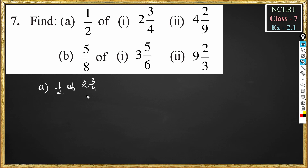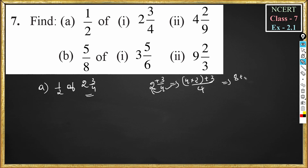So in this format, first we should convert the mixed fraction into an improper fraction. So 2 and 3 by 4 is equal to 4 into 2 — we multiply 4 with 2, then add 3, divided by 4 in the denominator. So this becomes 8 plus 3 divided by 4, which gives 11 by 4.